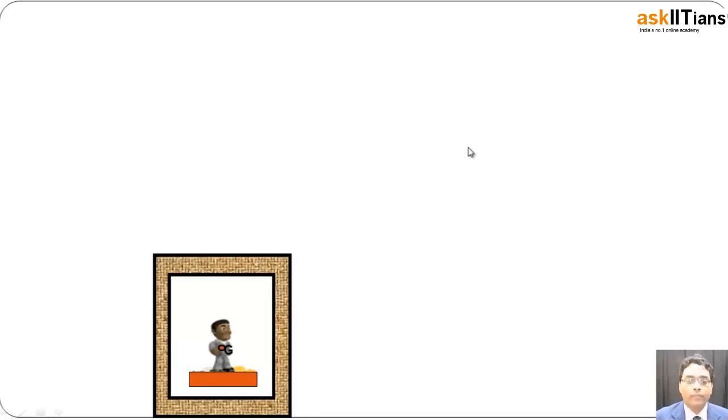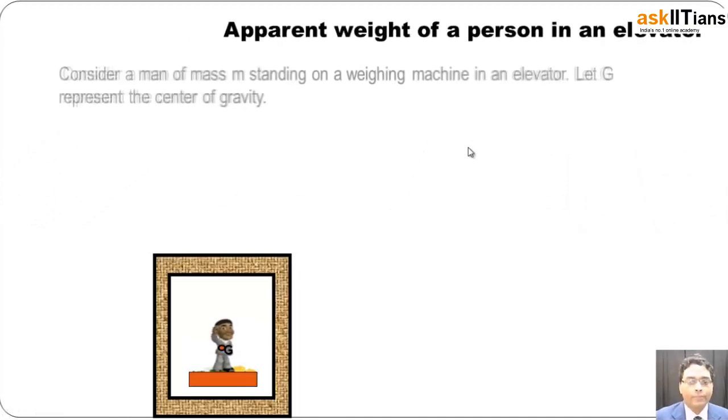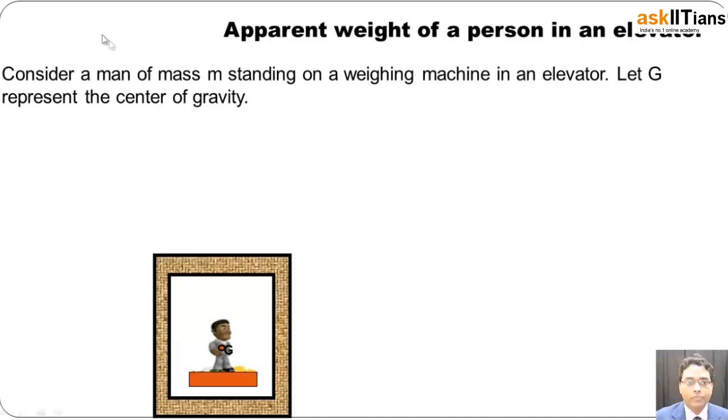to understand about the apparent weight, so stay tuned. Now we'll be discussing about the apparent mass of any object or apparent weight of any person in an elevator. We'll be discussing a couple of cases. Consider a man of mass m standing on a weighing machine in an elevator. Let G represent the center of gravity.